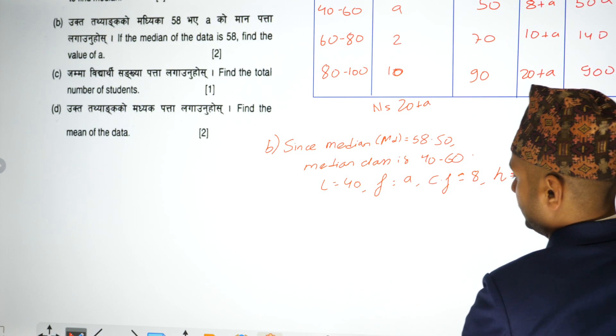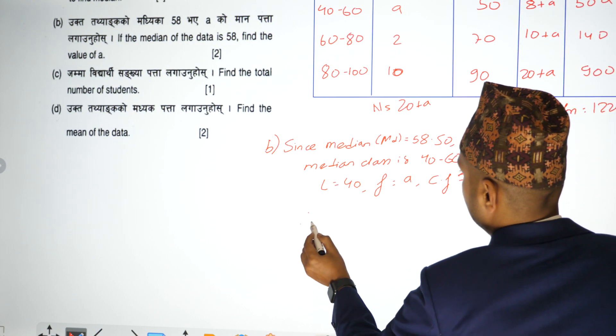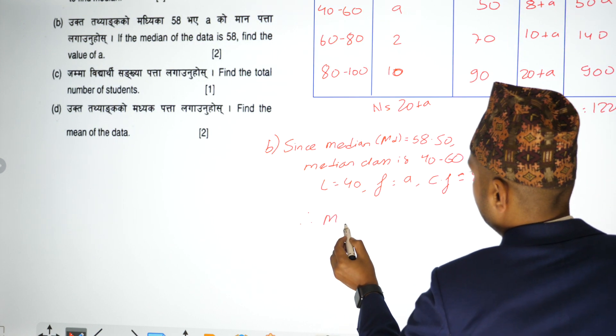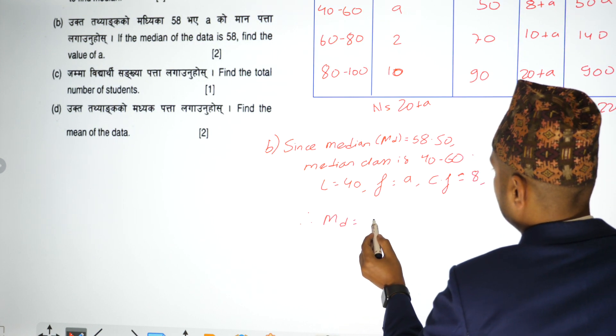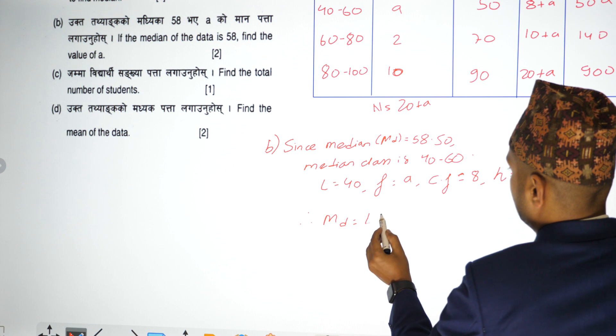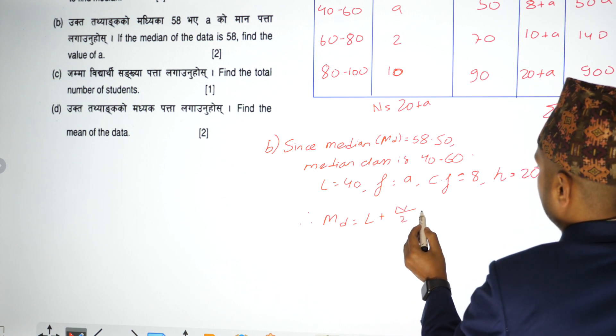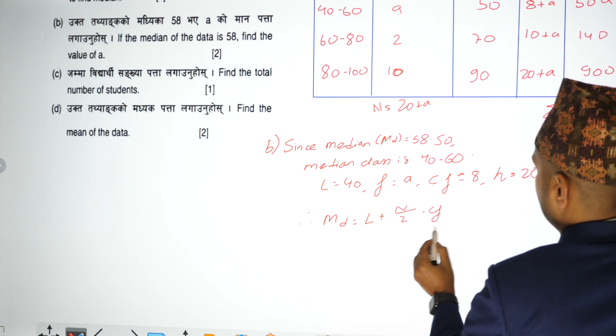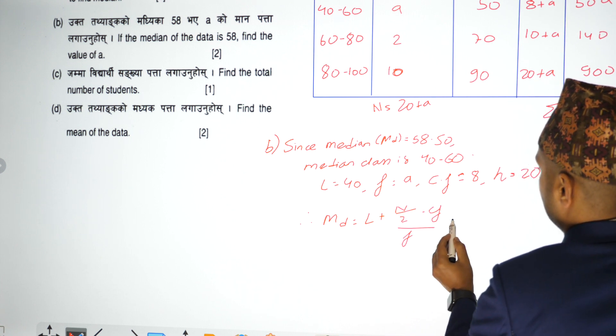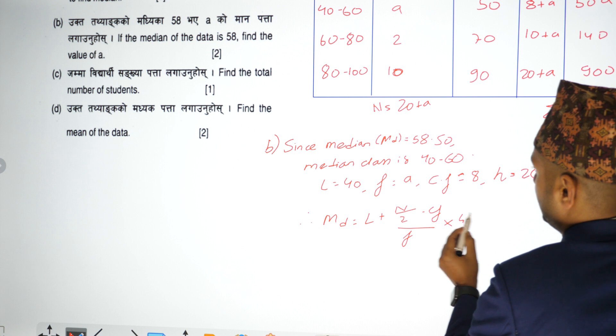Now, the formula is going to be, therefore, the median formula is L plus N by 2 minus CF by F into L.